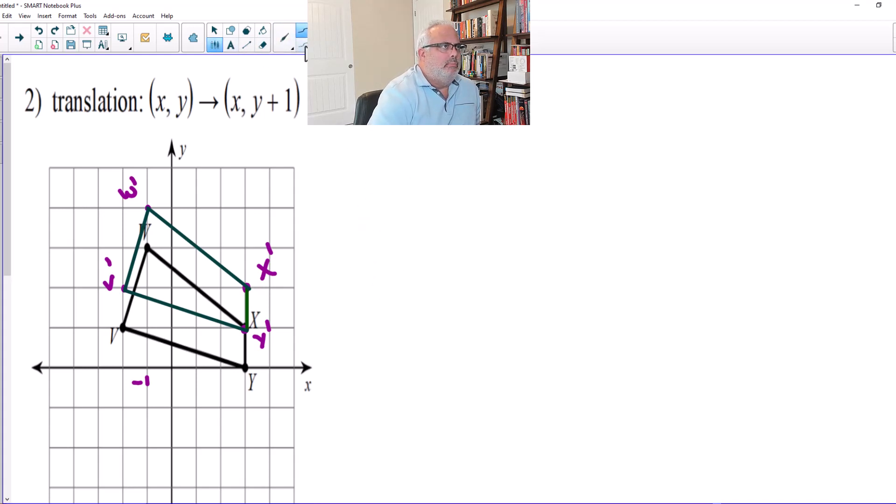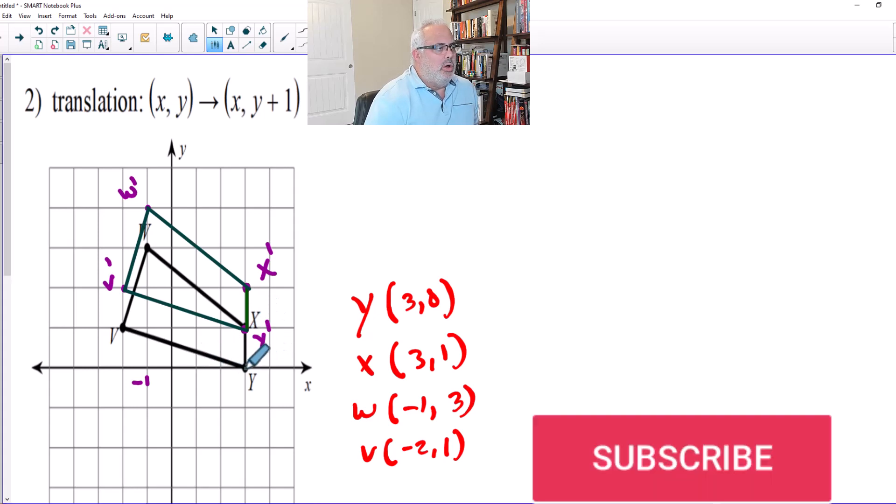Y, the x-coordinate will be 3, 1. The w-coordinate will be -1, 3. So let me double check: Y is (3, 0), X is (3, 1), W is (-1, 3), V is (-2, 1).